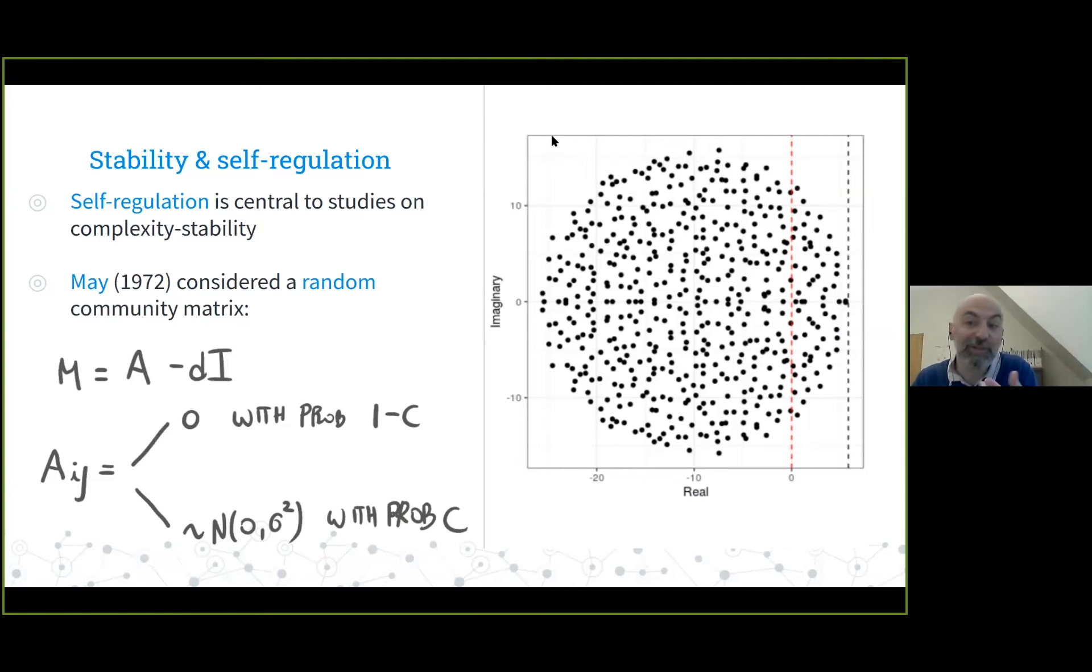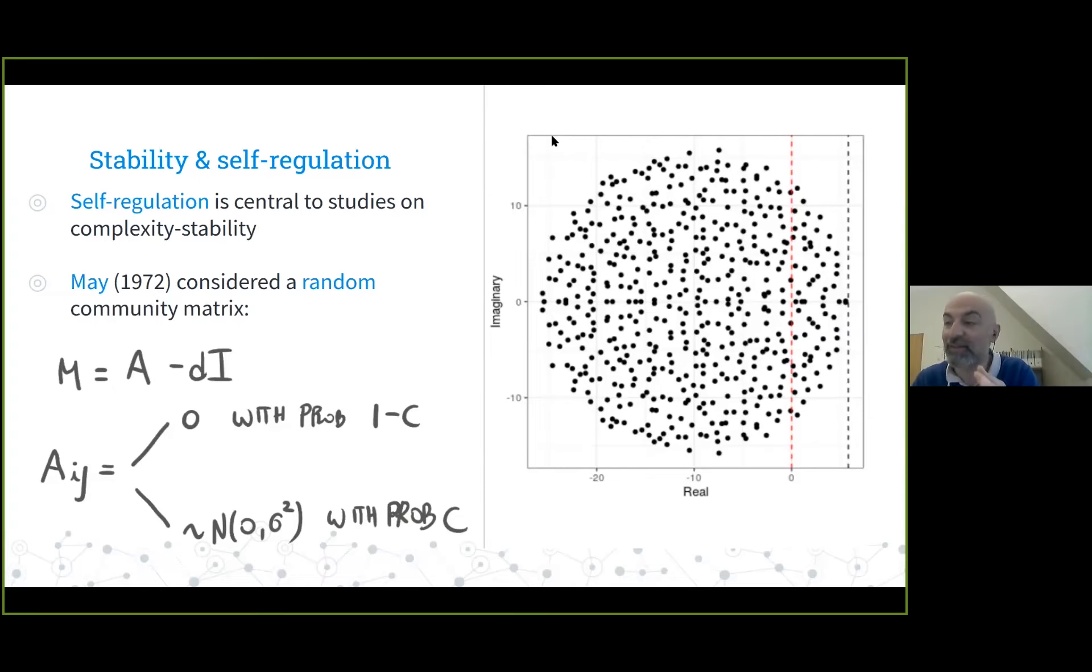If it is a circle, all we need to know is where is the center and what is the radius. May was able to calculate both. The center is very easy—it's just whatever we put on the diagonal. This minus the strength of self-regulation sets the center of the circle. We want to set the center to the left enough to offset the radius. What is the radius? It's the product of the number of species, the connectance, and the values of the interaction strength, then take the square root. This is what May called complexity. This paper started the famous stability-complexity debate.